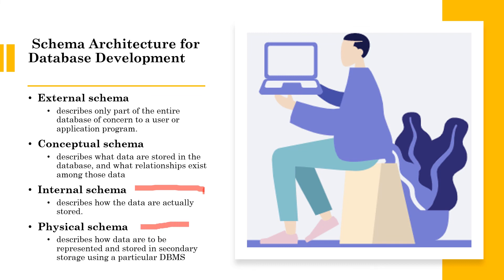The physical schema pertains to the actual storage of data and its form of storage, like files and indices, and defines how data will be stored in secondary storage. The logical database schema defines all the logical constraints that need to be applied on the stored data, including table views, integrity constraints, and more.